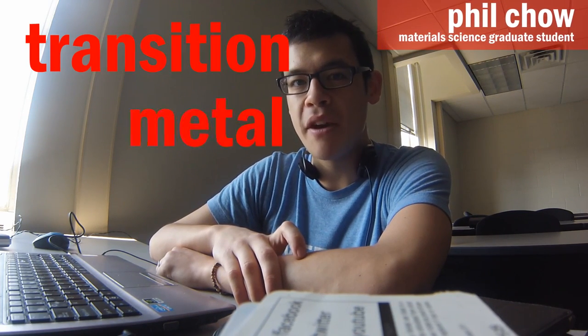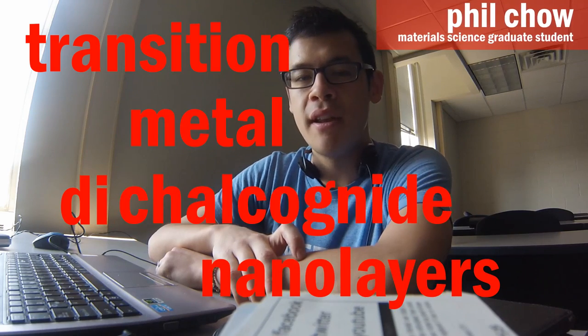Hi, my name is Phil, and today I'm going to talk to you about two-dimensional transition metal dichalcogenide nanolayers. This is a relatively new class of materials that's being heavily investigated for its remarkable properties, only achievable at the extreme nanoscale.